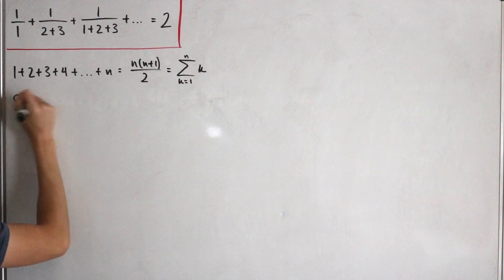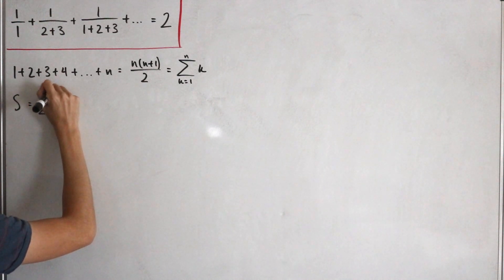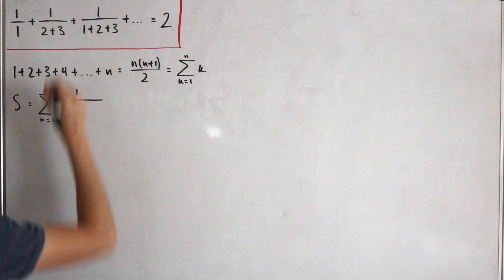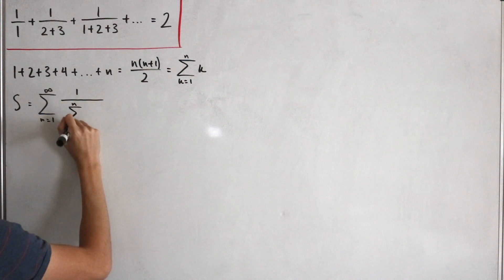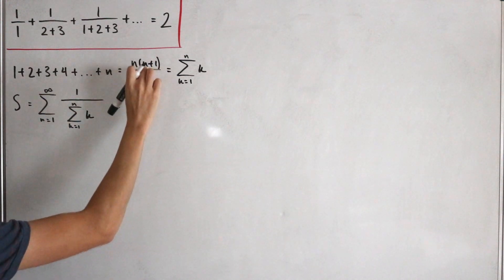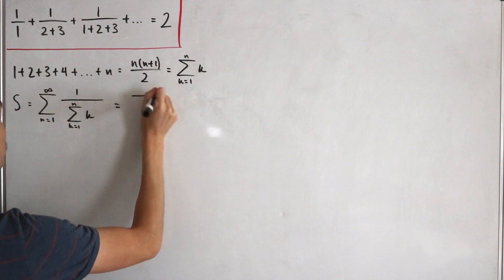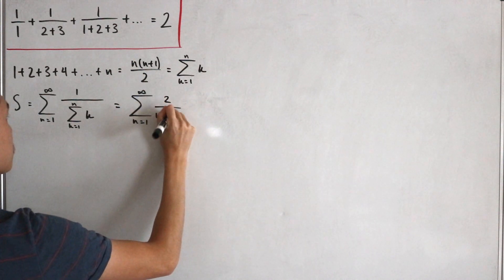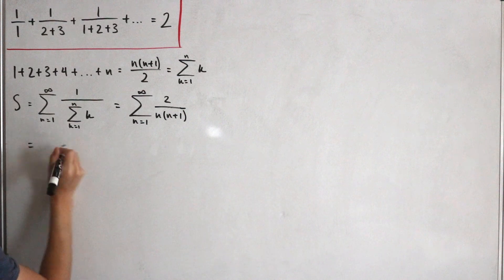Let's call the entire series S. This is the infinite sum from n equals one of one divided by the partial sum — which we replace using our formula — giving us the infinite sum from n equals one of two divided by n times n plus one.